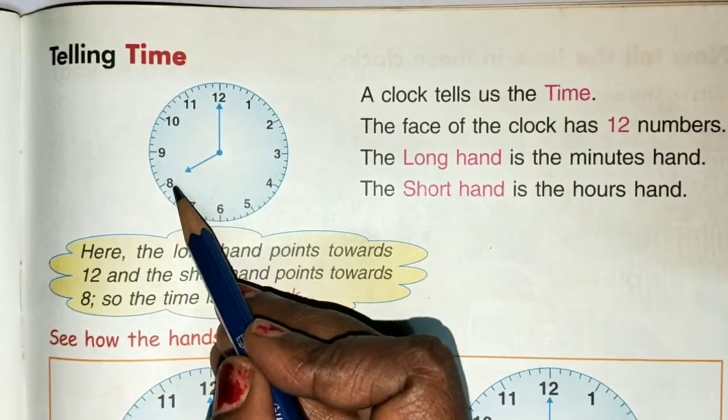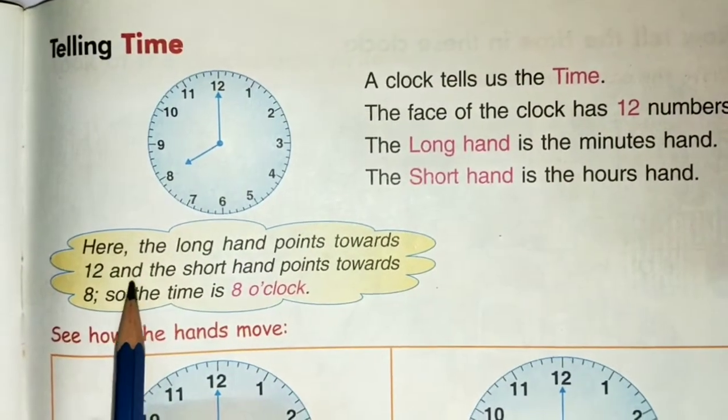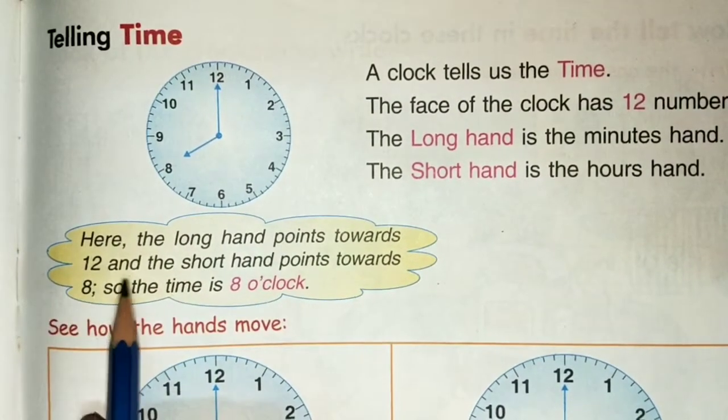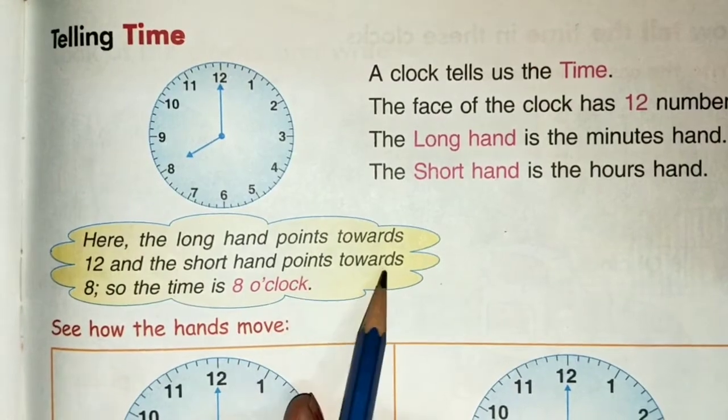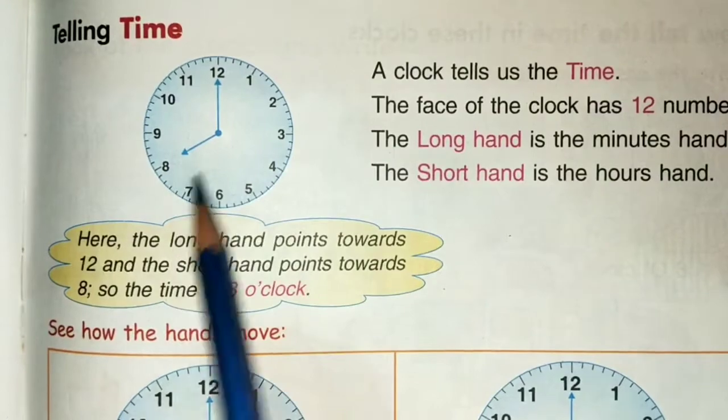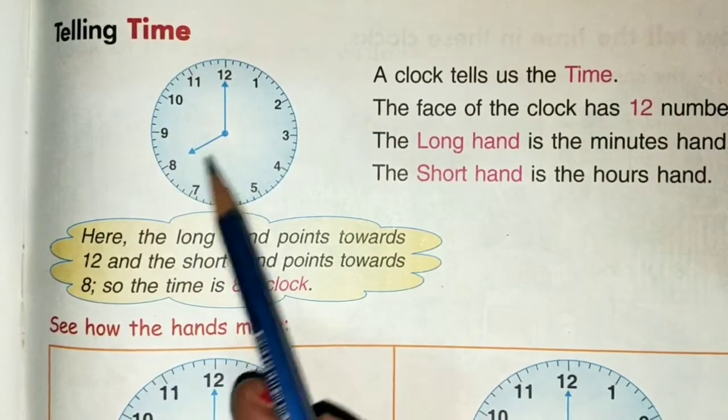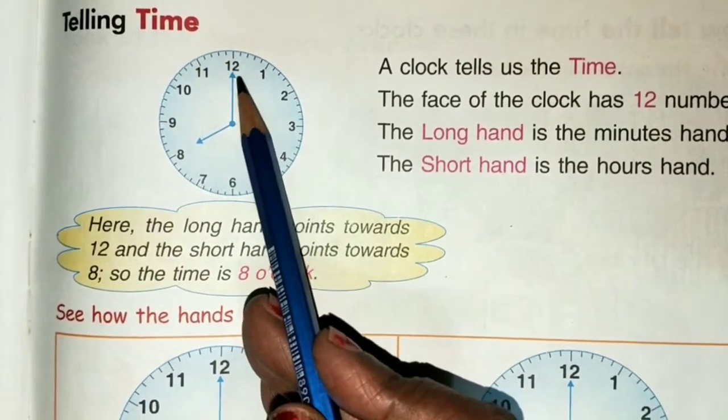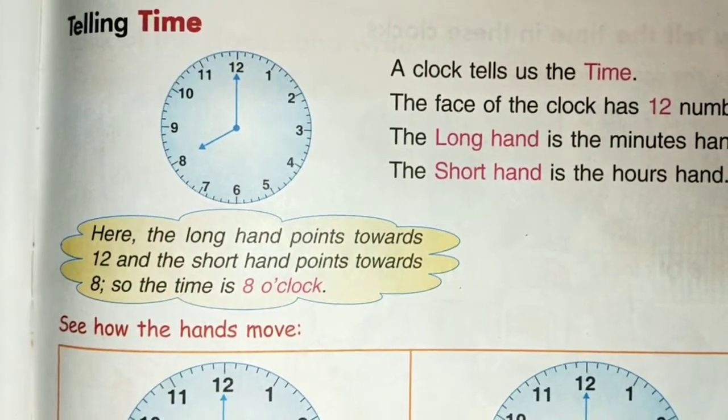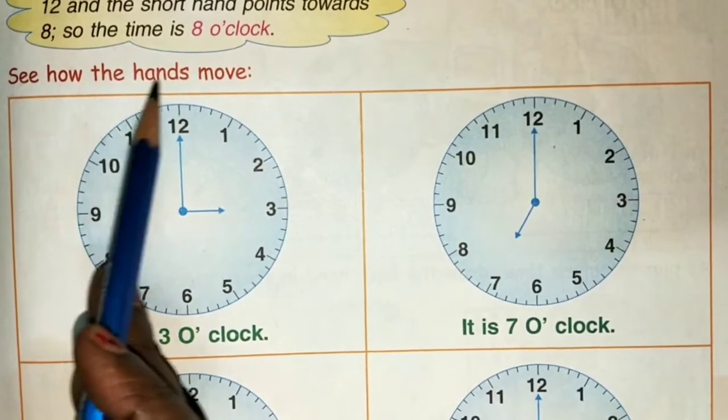How do we understand this? Let's read further. Here the long hand points towards 12 and the short hand points towards 8, so the time is 8 o'clock. The short hand is pointing at 8 and the long hand is pointing at 12, so it's 8 o'clock. Now let's see how the hands move.